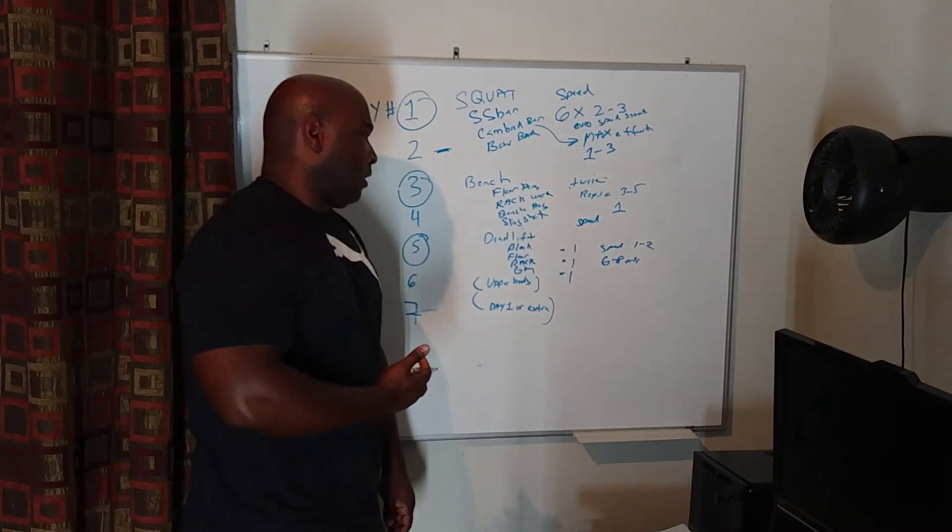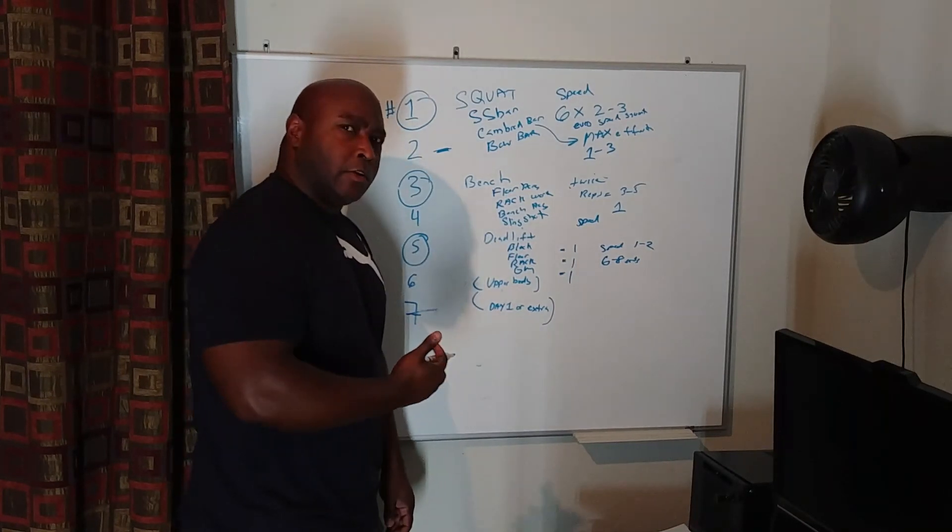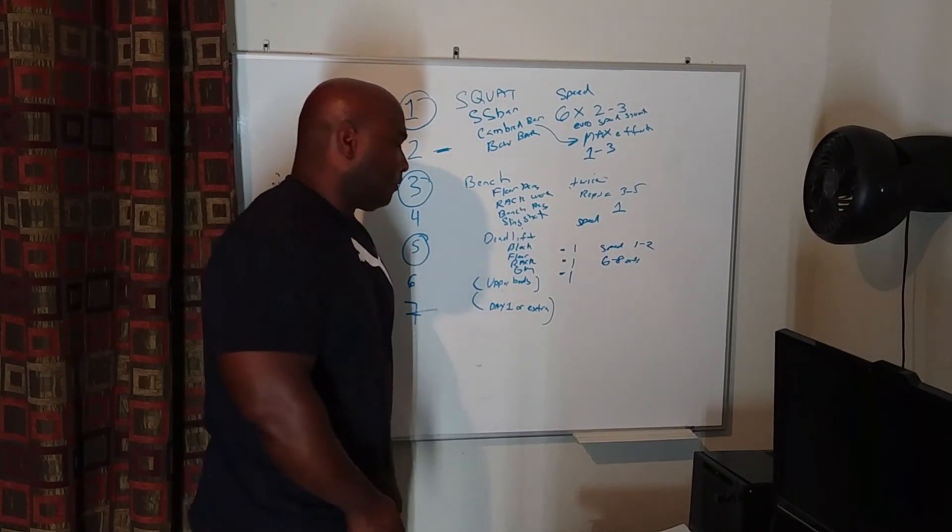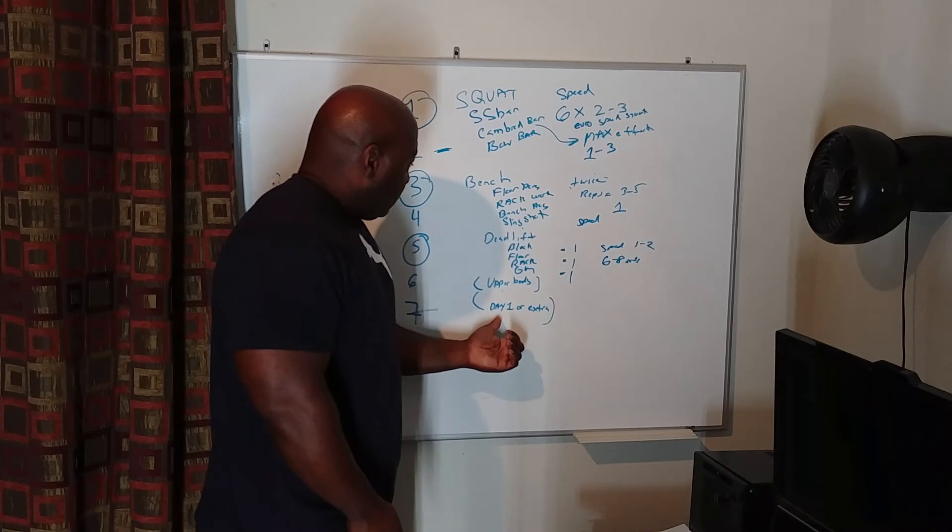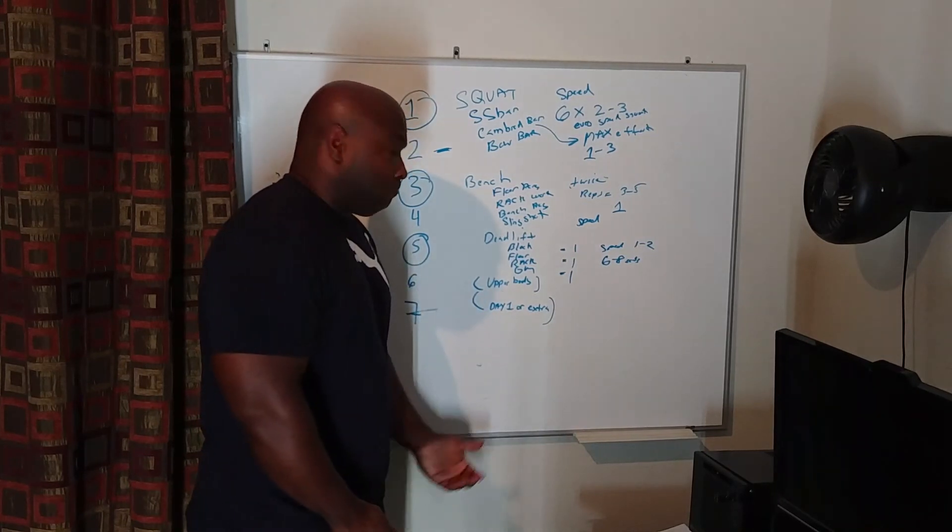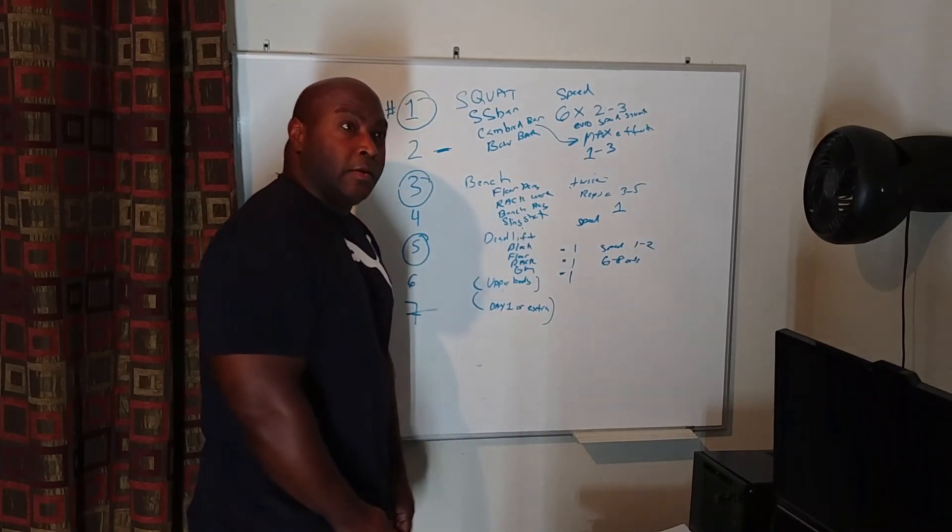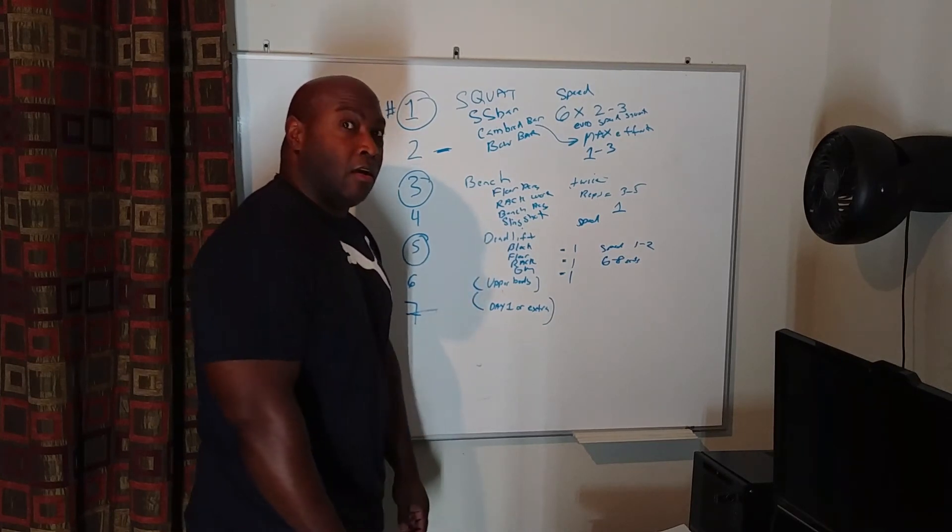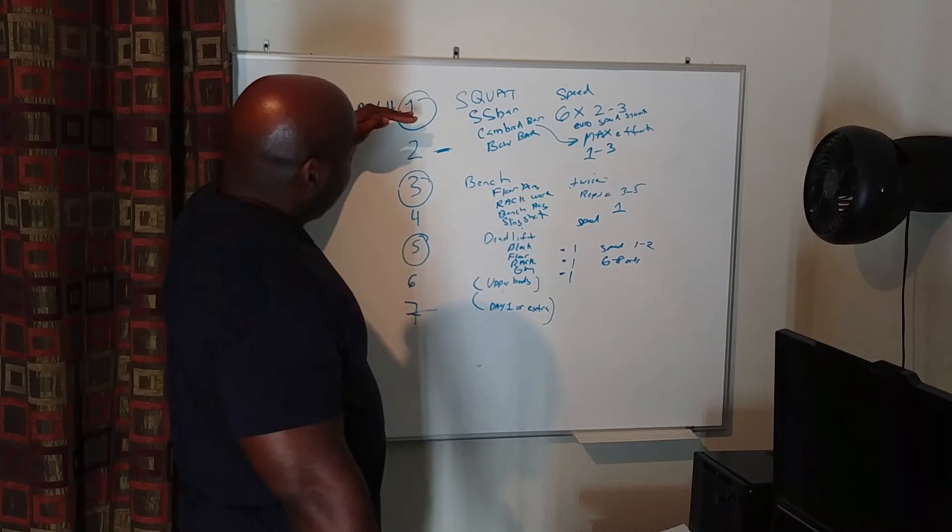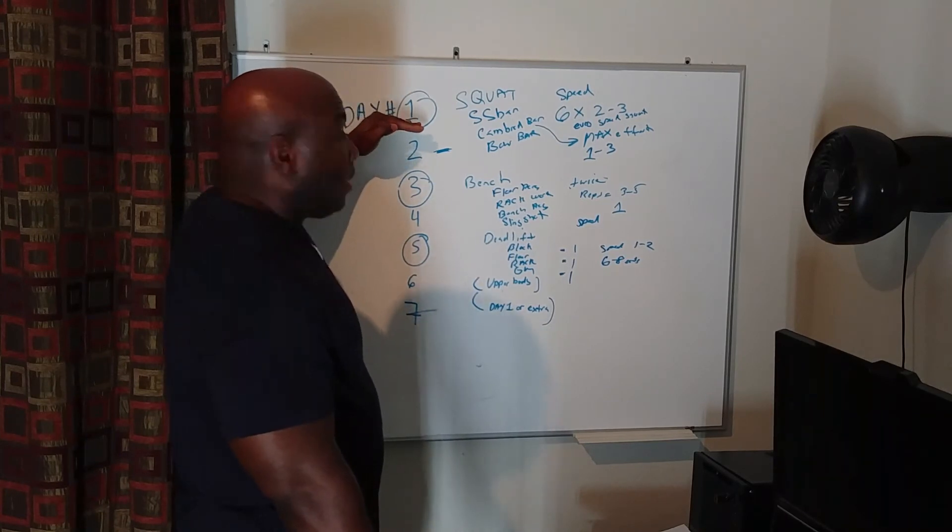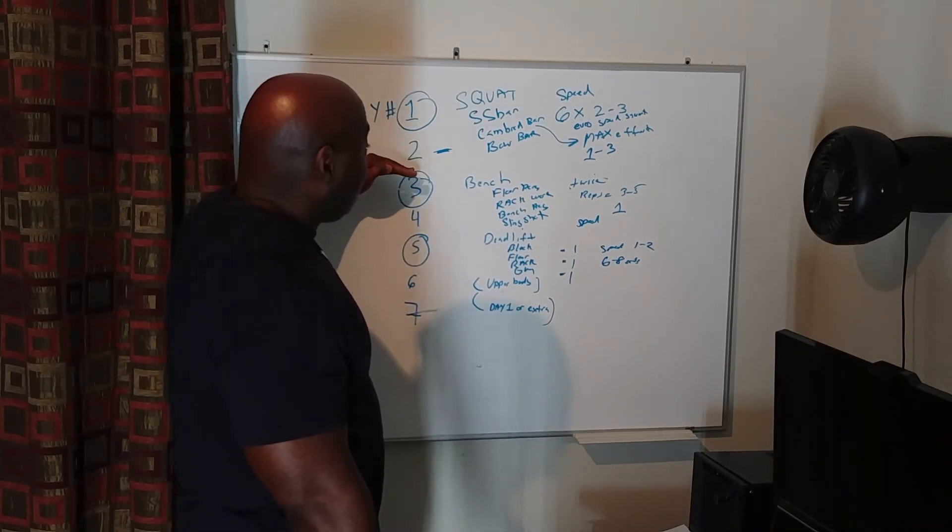Day seven, I can start over with day one, take another day to work on some weak points, or just take a day off. The way I design my routine is, even though I say this is day one, day one can actually happen on day two. Day three can happen on day four, and day five can actually happen on day six, depending on how the work week's going, depending on how I feel, if I'm recovered or not.